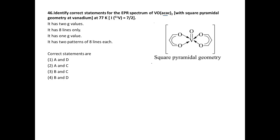If you see the structure of vanadium acetoacetate, it looks something like this — I have drawn it — and it has square pyramidal geometry. Oxygen and carbon do not have any nuclear spins, so the EPR spectra will only be obtained because of the spin of vanadium.